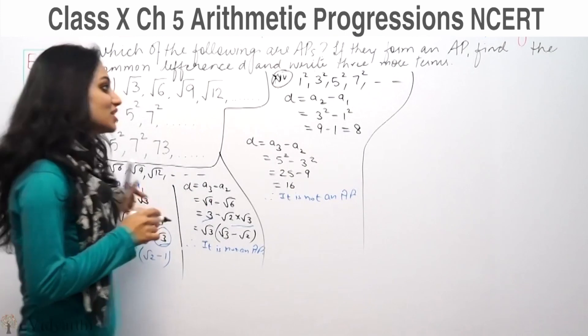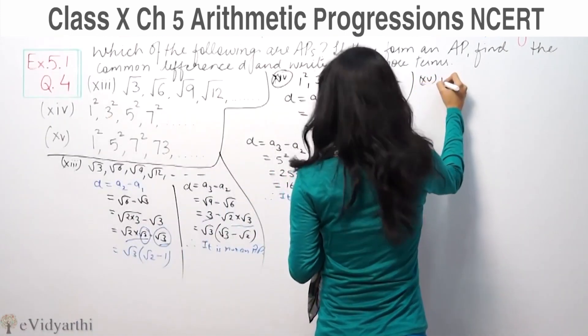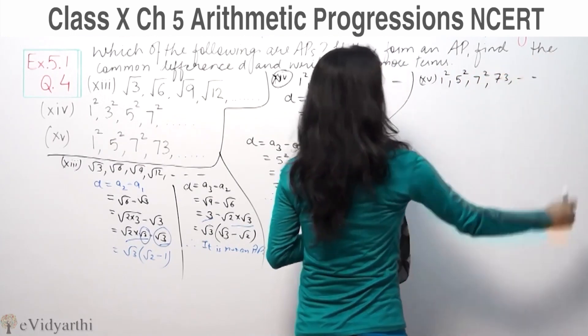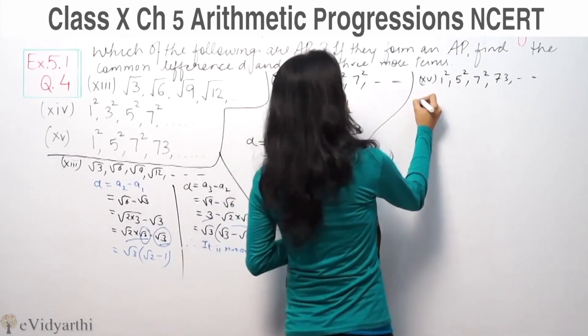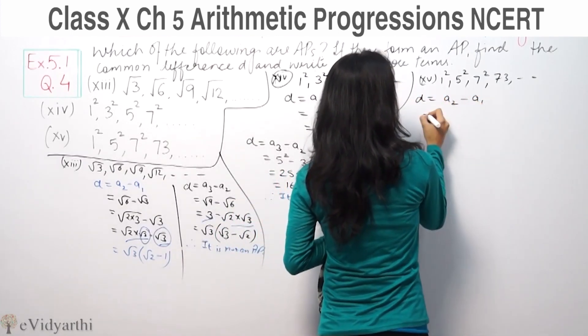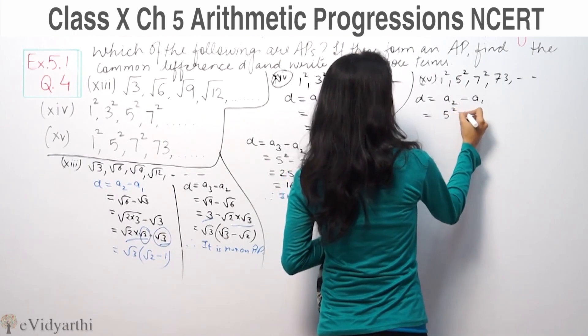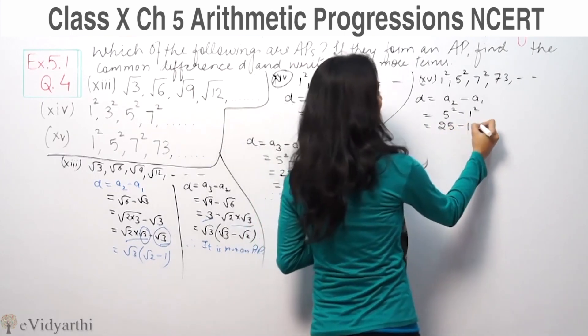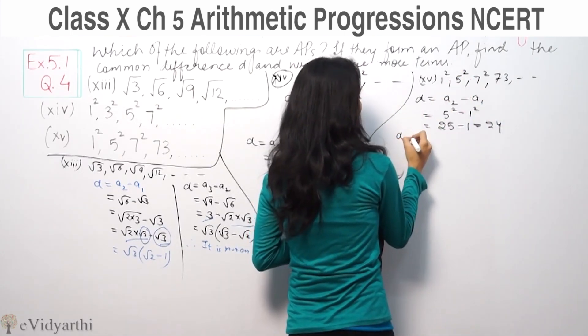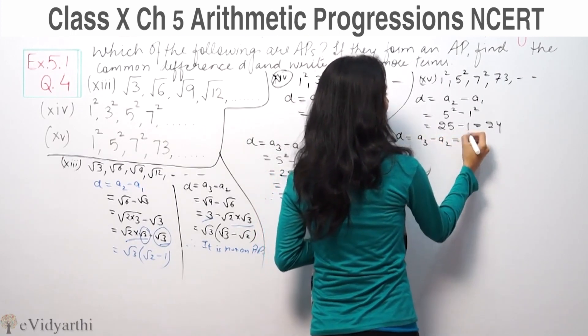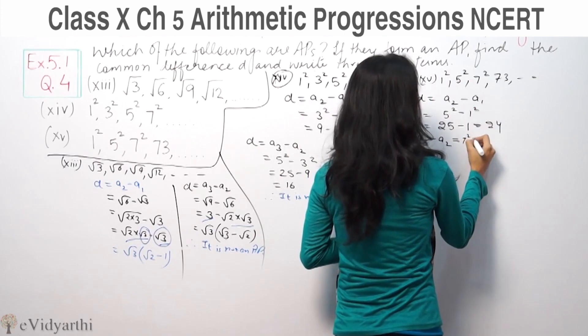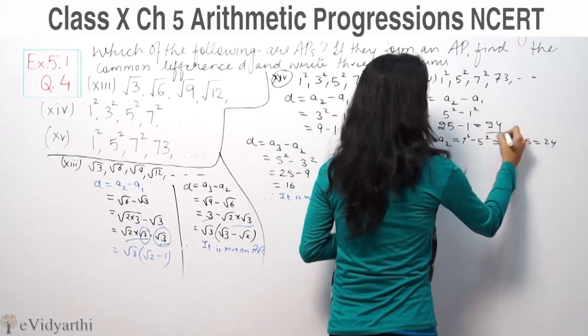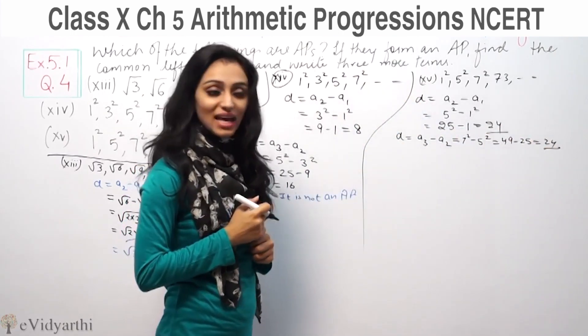Part number 15. Common difference is A2 minus A1. A2 is 5 square minus 1 square, so 25 minus 1 equals 24. Next check A3 minus A2. A3 is 7 square, A2 is 5 square. 7 square minus 5 square, that's 49 minus 25 is 24. Common difference is the same. Therefore this is an AP.